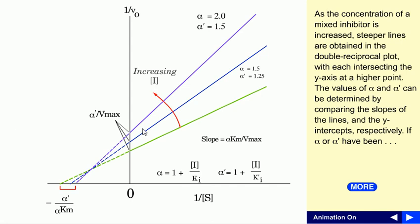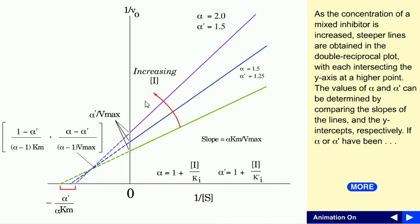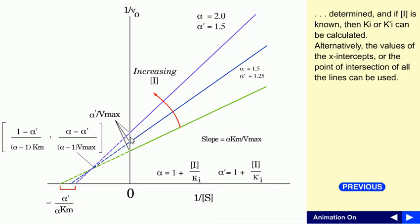As the concentration of the mixed inhibitor is increased, steeper lines are obtained in the double reciprocal plot, with each line intersecting the Y-axis at a higher point. The values of α and α' can be determined by comparing the slopes and Y-intercepts respectively. If α or α' are determined and the inhibitor concentration I is known, then Ki and K'i can easily be calculated. Alternatively, the X-intercepts or the intersection point of all lines can be used.